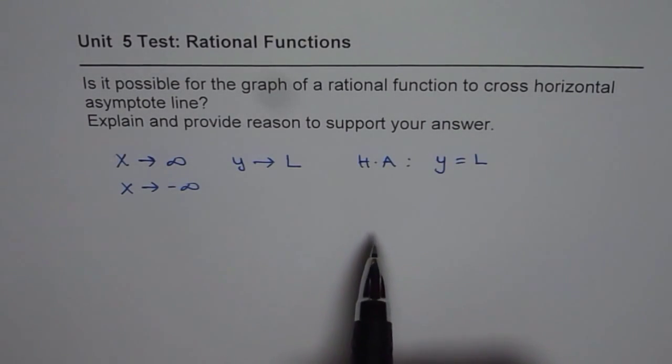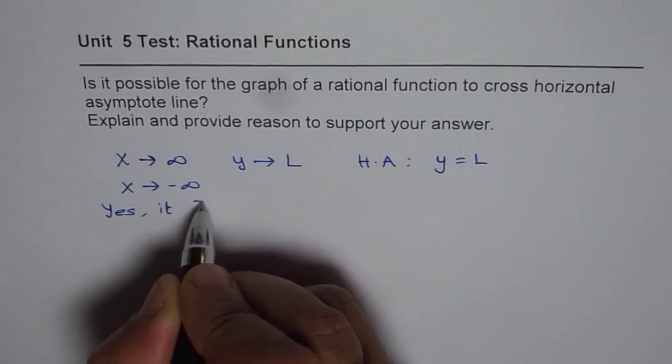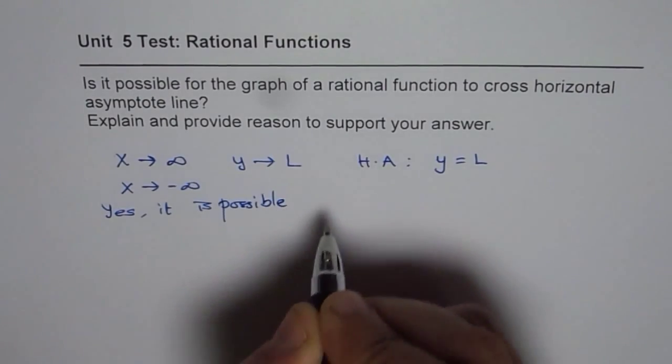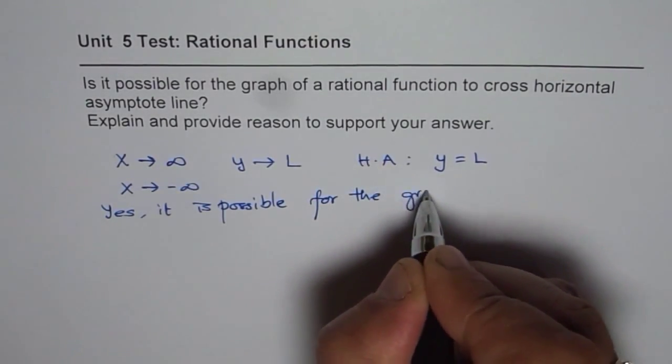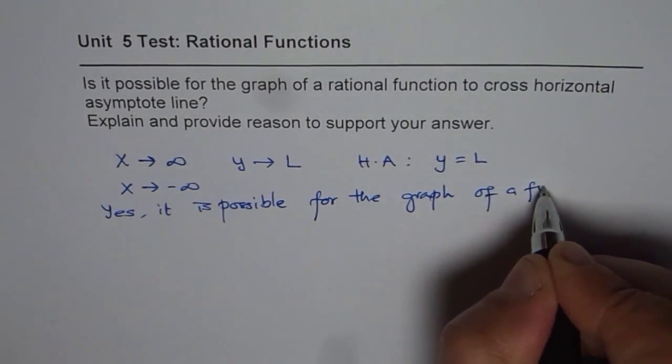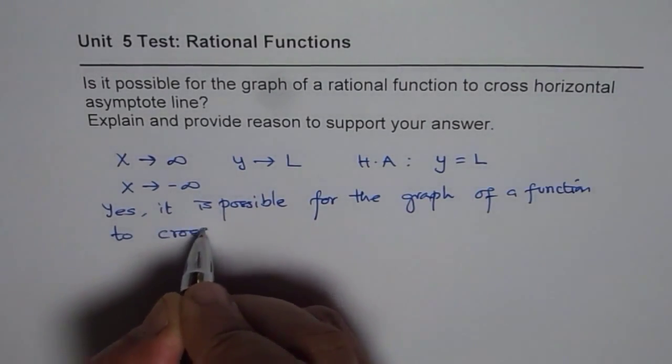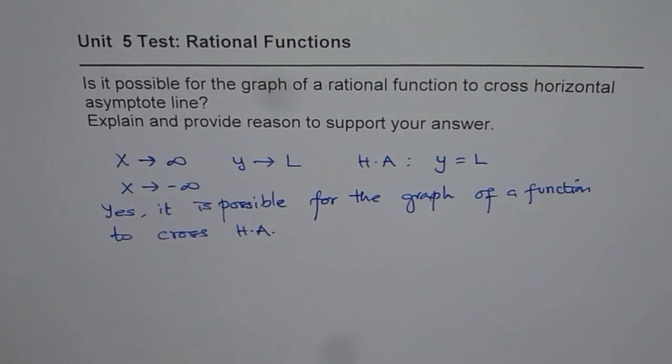So our answer is that yes, it is possible for the graph of a function to cross horizontal asymptote. Now, let's provide an example.